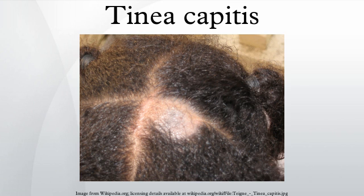Favus causes crusting on the surface of the skin combined with hair loss, and is associated with Trichophyton schoenleinii.